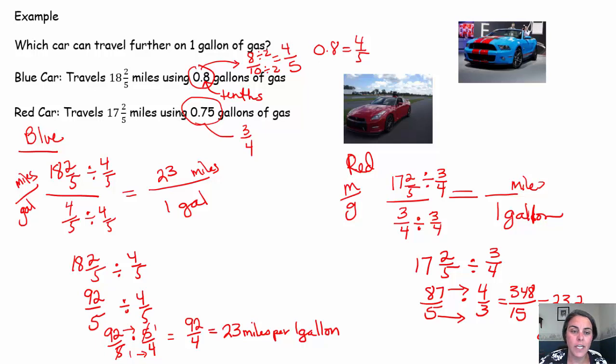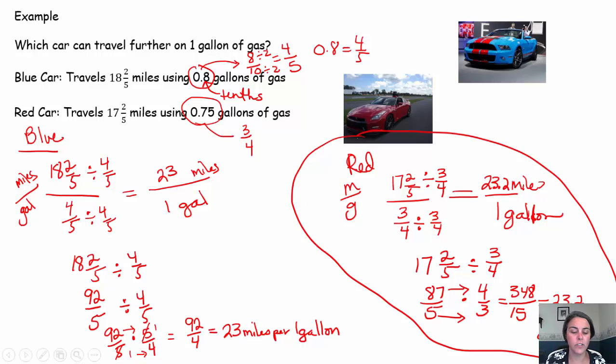Therefore, if the red car can go 23.2, 23.2 is further than 23, your red car wins. Your red car travels further.